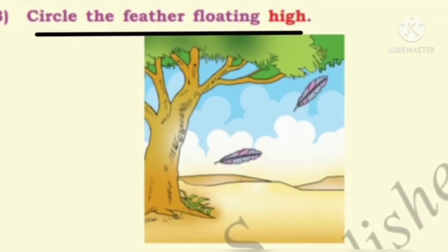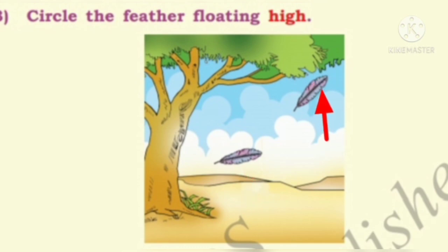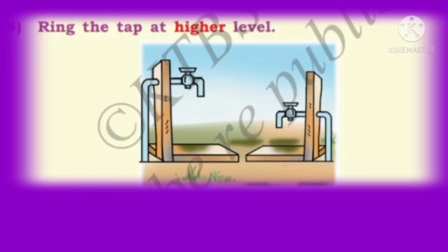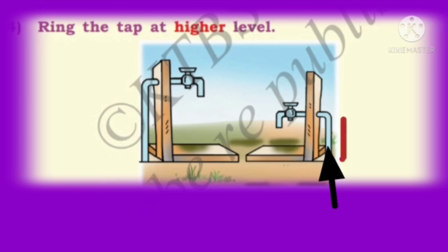Next, we have to circle the feather floating high. Children, observe this picture. In this picture, two feathers are floating. Which one is floating high? This feather is floating high, so let us circle around it. Next, let us compare these two taps. The first tap is higher than the second tap, so let us put a circle for the first tap.